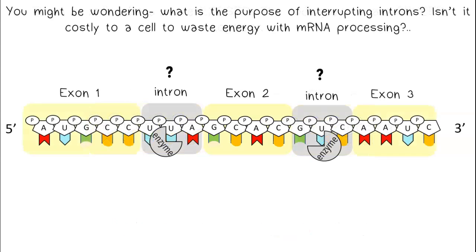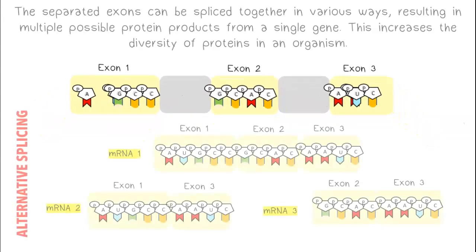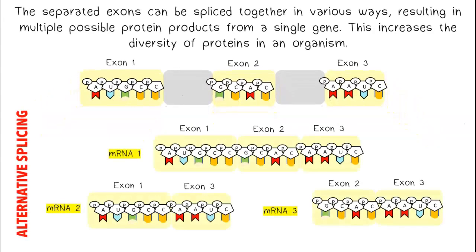You might be wondering, what is the purpose of interrupting introns? Isn't it costly to a cell to waste energy with mRNA processing? One benefit of the interrupting introns is the potential for alternative splicing. The separated exons can be spliced together in various ways, resulting in multiple possible protein products from a single gene. This increases the diversity of proteins in an organism.